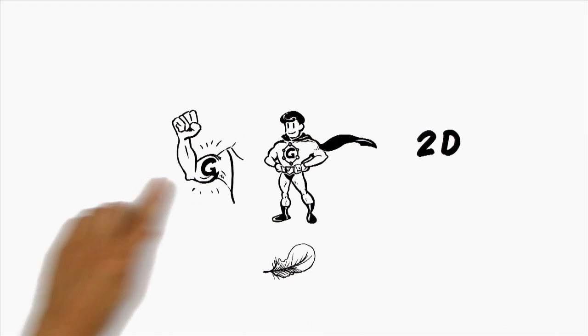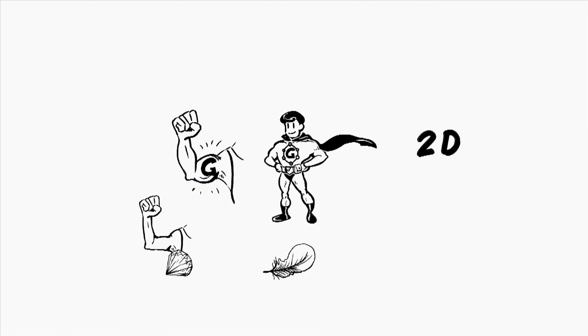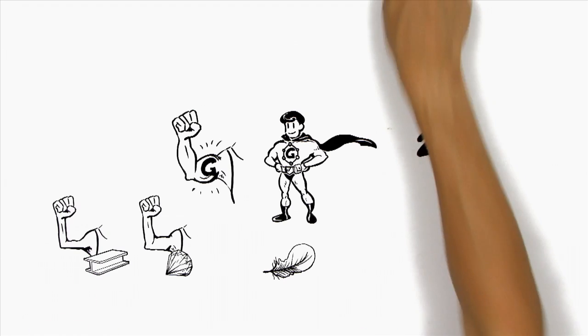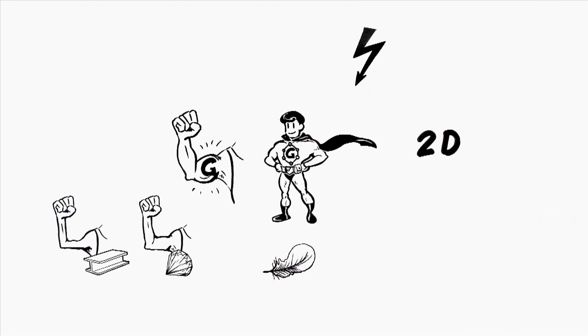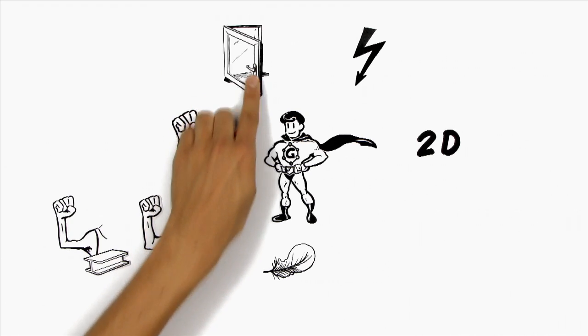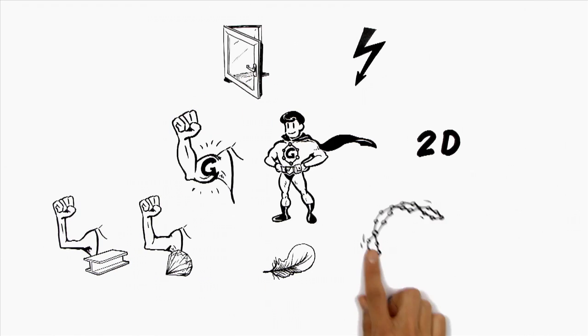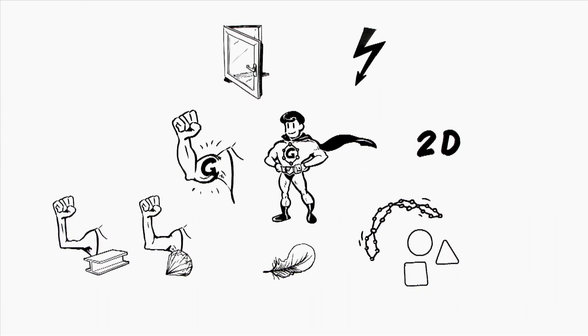Graphene is the world's strongest material, harder than diamond and about 300 times stronger than steel. It conducts electricity much better than copper. Graphene is transparent, bendable, and can take any form you want.